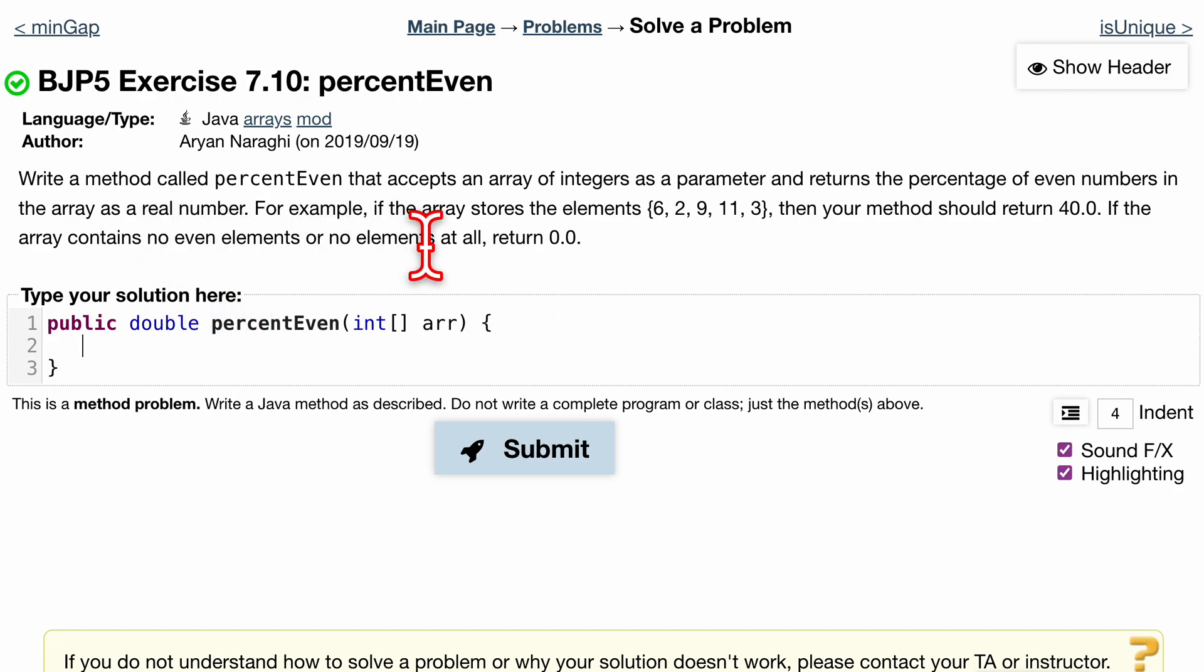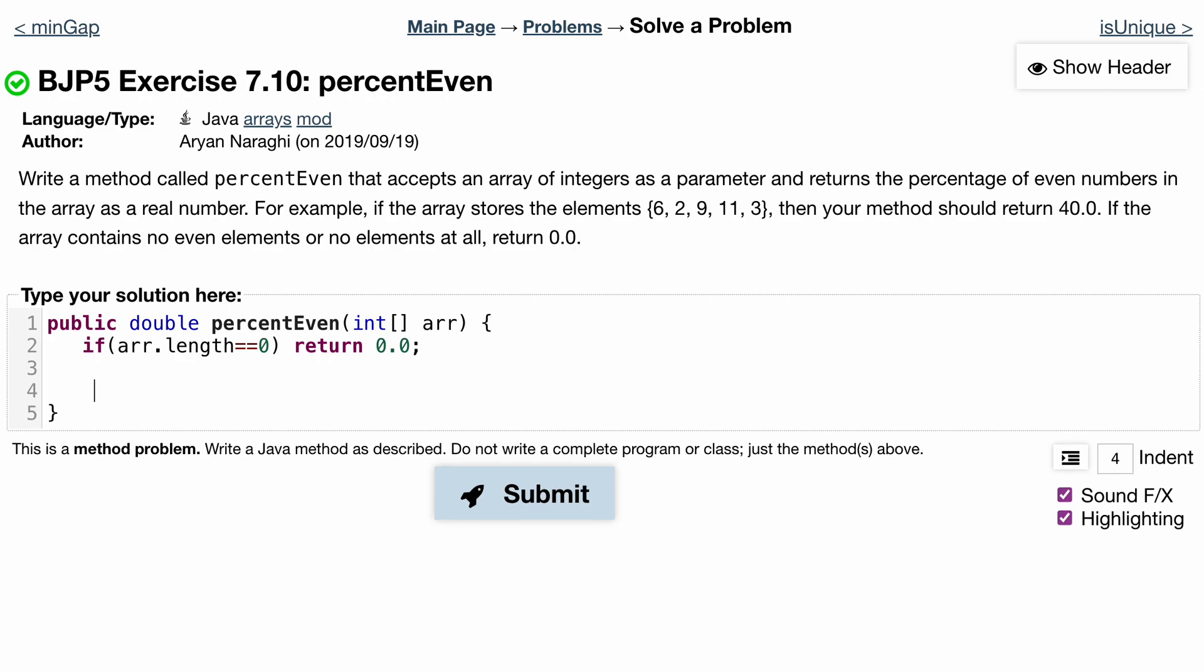We do have to do a check though. If it has no elements, we're just going to return 0.0. If I divide by array length and it's 0, that's going to give us a divide by zero exception, so we have to make an actual check for this. If our arr.length is equal to 0, we just return 0.0 since it's a double.